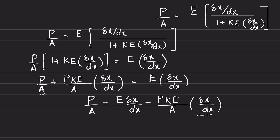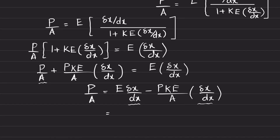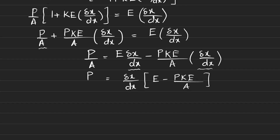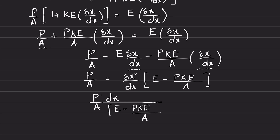Since delta x over dx is common in both terms on the right side, we factor it out: P over A equals (delta x over dx) times (E minus P times k times E over A). Solving for delta x: delta x equals P over A times dx divided by (E minus P times k times E over A).